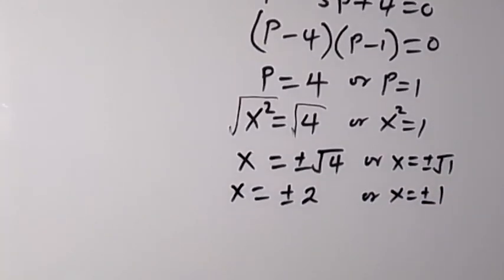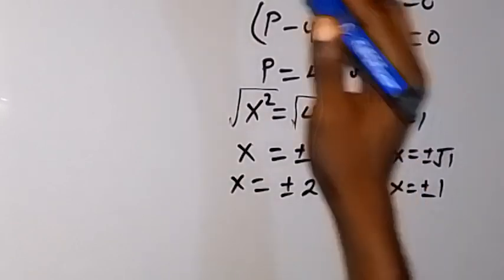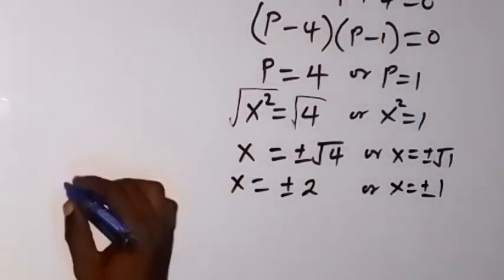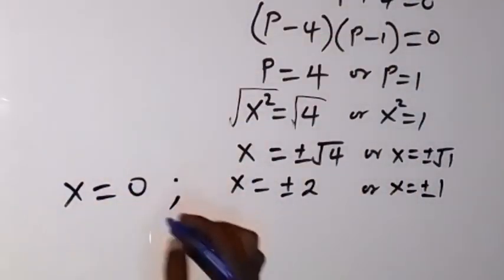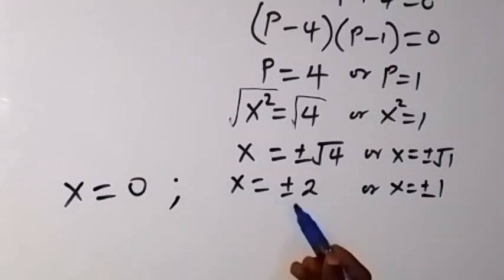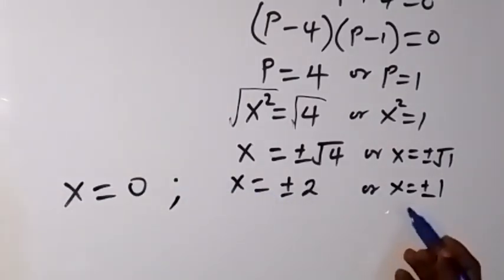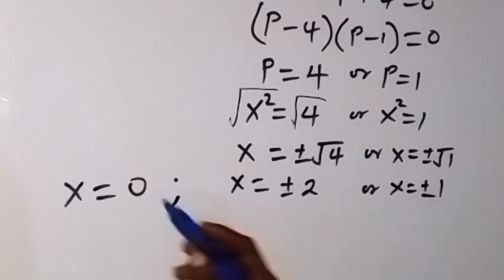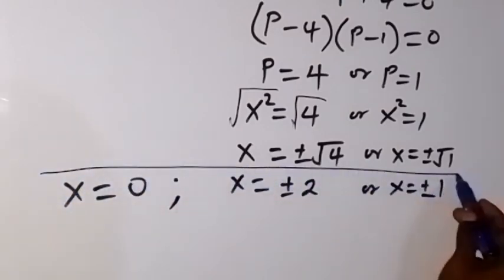So the values of x that we have now: from the first one we have x = 0, and we also have x could be -2 or +2, and x could be +1 or -1. So these are the values of our x.